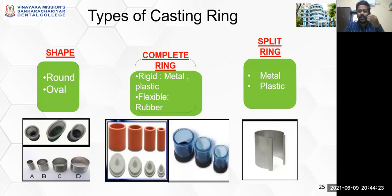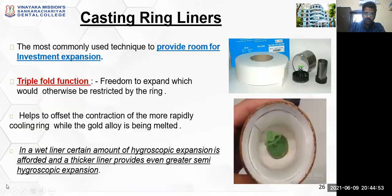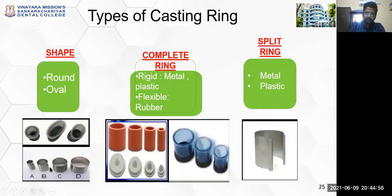Casting rings are available in different shapes: round and oval. Based on material, they can be metal or flexible rubber. Based on split, you can have a complete casting ring or a split casting ring — either metal or plastic split. You have a metal complete round casting ring, oval-shaped casting rings, a flexible rubber type, and a split casting ring made of either metal or plastic.